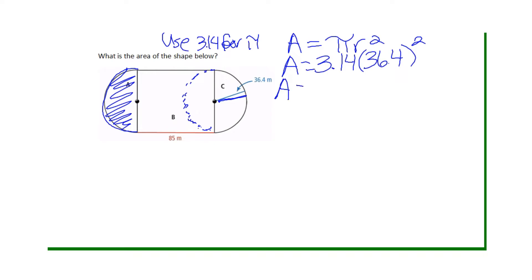Now you have to make sure you square first. Do not multiply 3.14 and 36.4 first. You have to square first. So when I square 36.4 I get 1,324.96. Now I have to multiply that by pi which I get 4,160.3744.